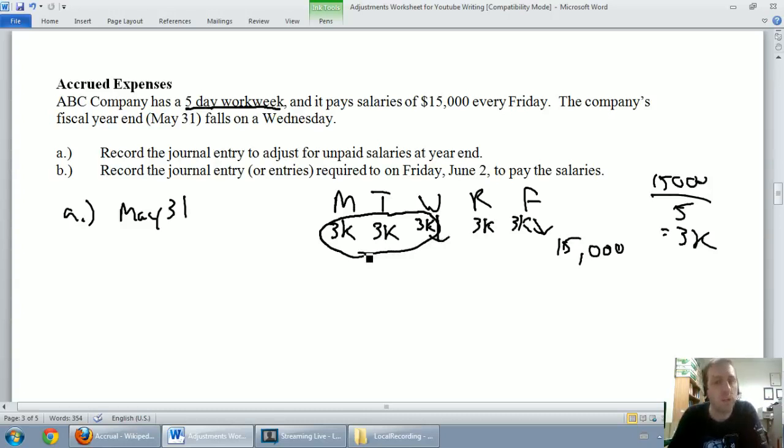Our journal entry here is pretty simple. We're gonna say, well what's the expense? It's a salaries expense, so we're gonna debit salaries expense.